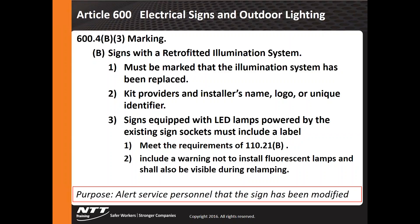Article 600 addresses marking of equipment. As equipment moves from fluorescent to LED, the internal components change and personnel may not realize it. When retrofitting an illumination system with LED tubular replacements into a fluorescent fixture, it must be labeled indicating it has been changed, identifying who provided the retrofit kit. This labeling helps personnel understand the hazards and differences in the system.